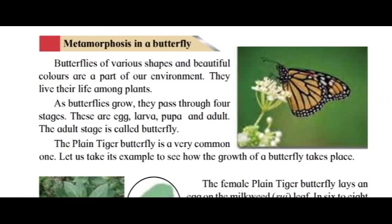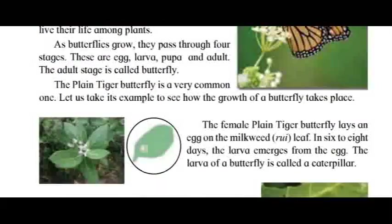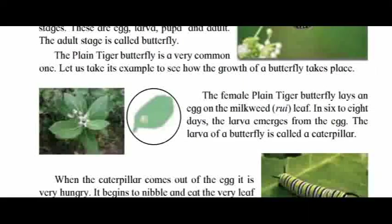Metamorphosis in a butterfly. Butterflies of various shapes and beautiful colors are a part of our environment. They live their life among plants. As butterflies grow, they pass through four stages: egg, larva, pupa, and adult. The adult stage is called the butterfly. The plain tiger butterfly is a very common one.